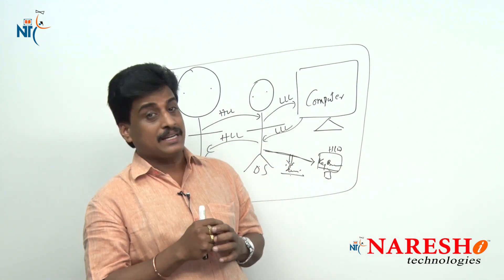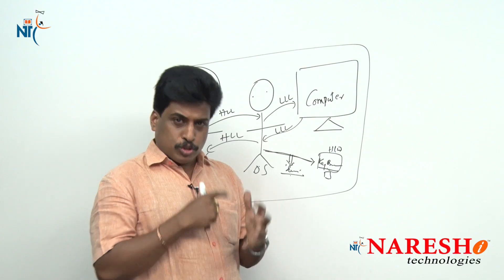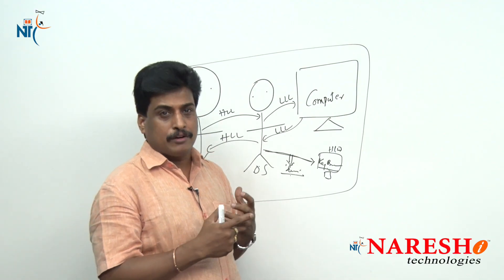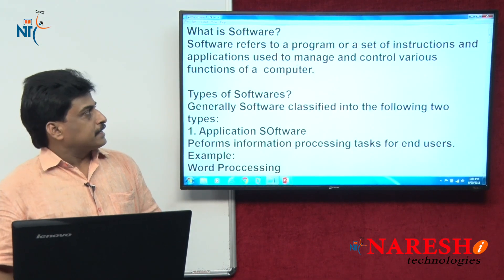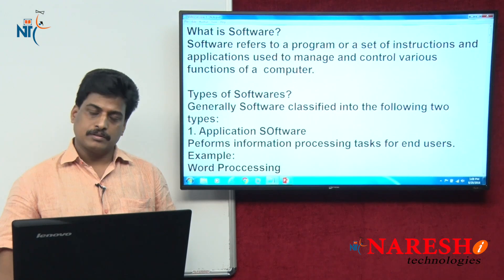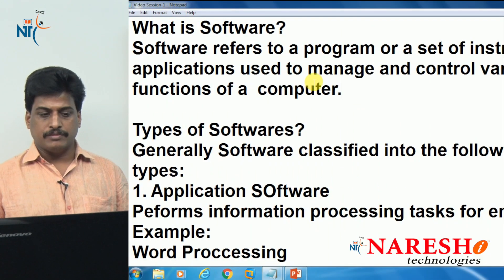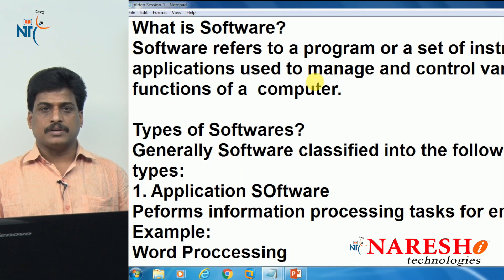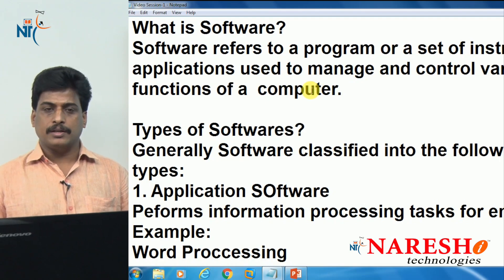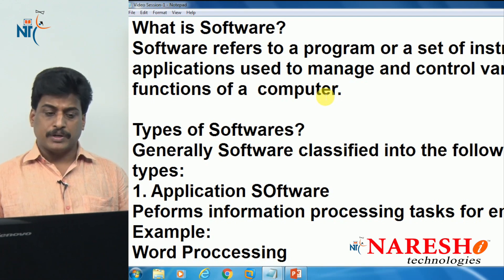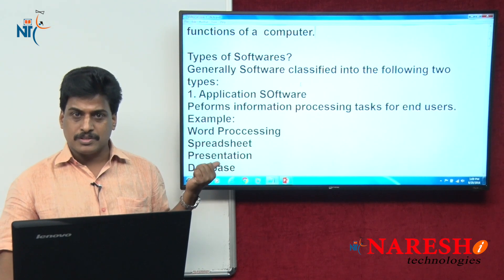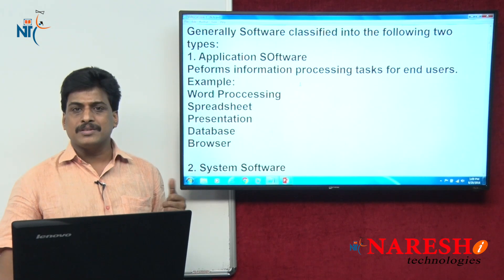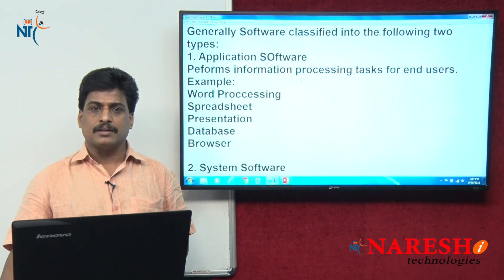Let us now go through screenshots and a presentation in more detail. Software refers to programs, sets of instructions, and applications used to manage and control various functions of a computer. Types of software — mainly two types: application software and system software. Application software performs information processing tasks for end users, like word processors, spreadsheets, presentations, databases, and browsers.